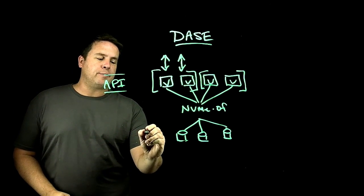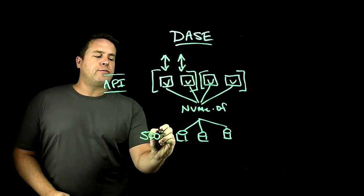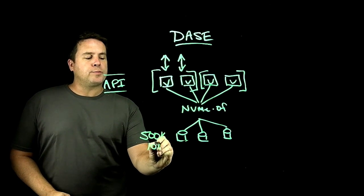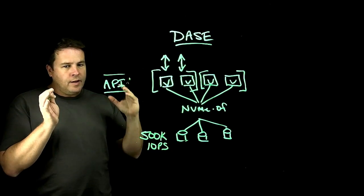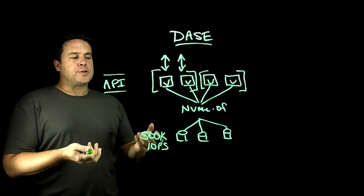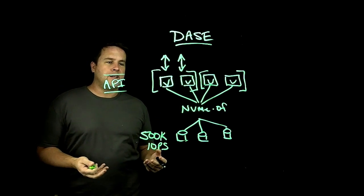And if you think about a modern NVMe device, you've got something like 500,000 IOPS that are supportable by each device. From a hardware perspective, they're designed to support ultimate levels of contention.